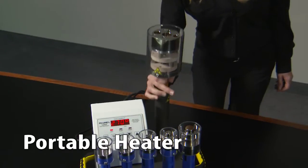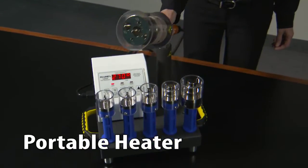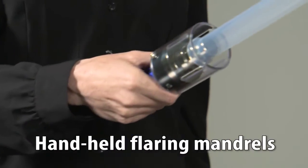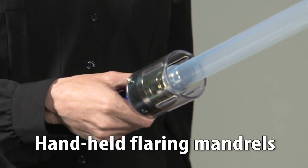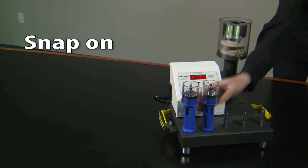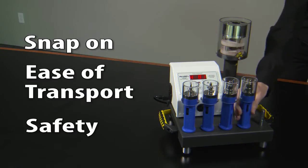The portable heater with its 15-foot power cord allows you to get away from the base unit and go into tight spaces while the handheld flaring mandrels make life in cramped quarters much easier. Both the portable heater and flare mandrels snap onto their respective holders for ease of transport and safety.